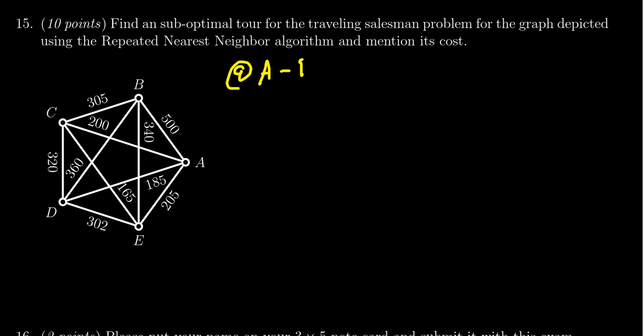We go from A to D to E to C to B to A, which has a cost of 185 + 302 + 165 + 305 + 300, which equals 1457. That's one option.